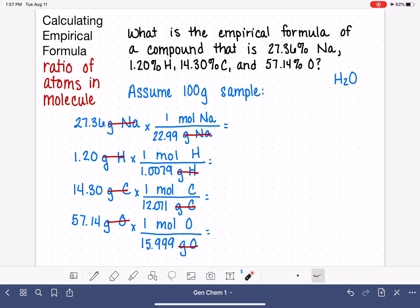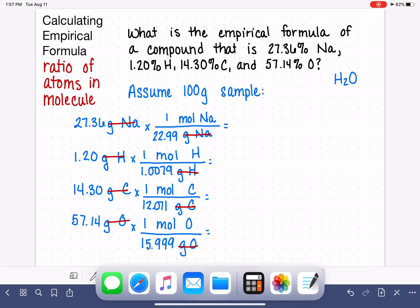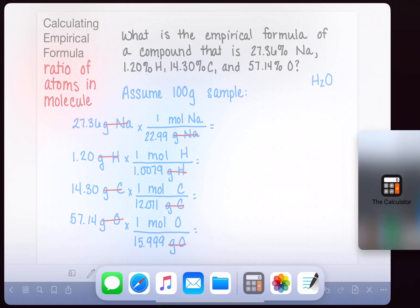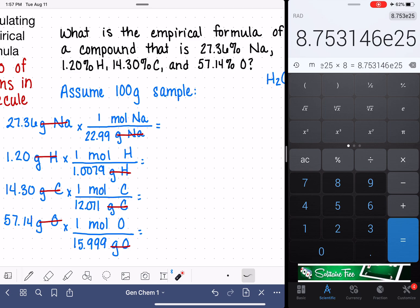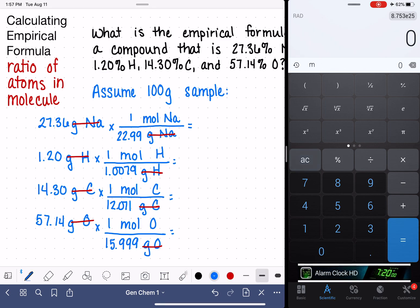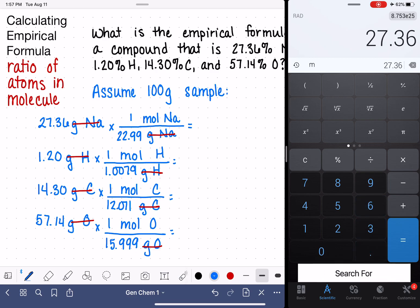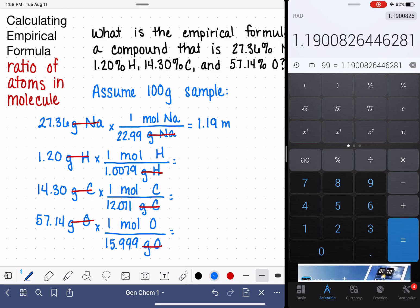So we are basically ready to do some math on this. Let me open up the calculator here so that we can do the calculations. We are trying to calculate the number of moles of each one of these things. So we have 27.36 grams of sodium divided by 22.99. That is 1.19 moles of sodium.